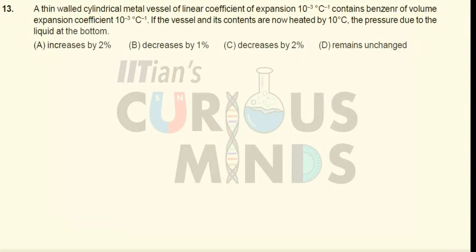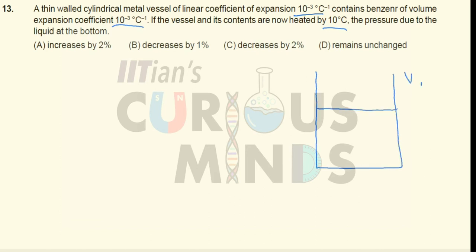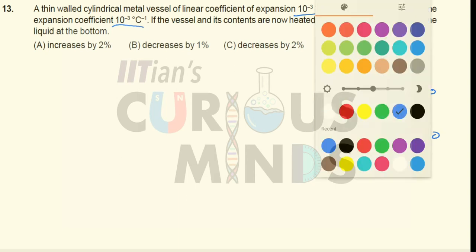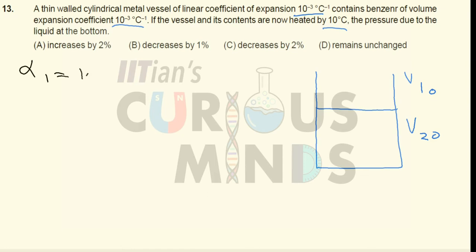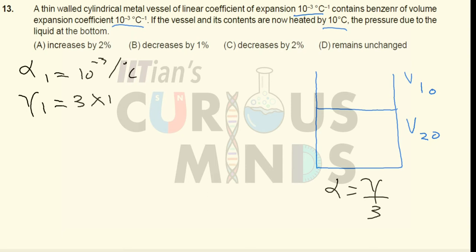A thin-walled cylindrical metal vessel with linear expansion coefficient α = 10⁻³ per °C contains benzene with coefficient of expansion γ = 10⁻³ per °C. The vessel and its contents are heated by 10°C, and we need to find the pressure at the bottom. For the vessel, since α = γ/3, we get γ₁ = 3α = 3×10⁻³ per °C. The benzene's γ₂ = 10⁻³ per °C.